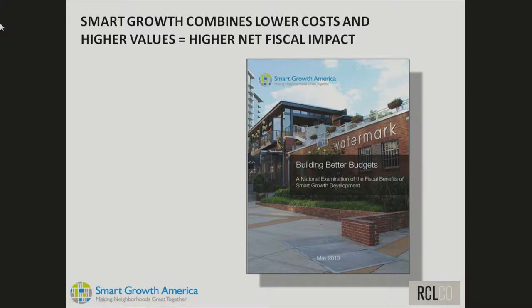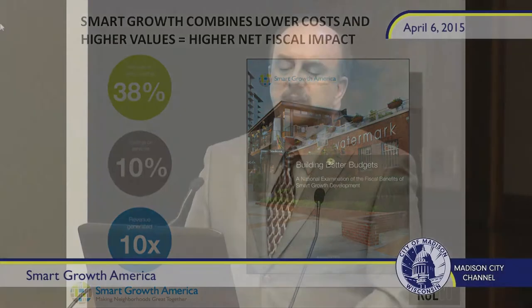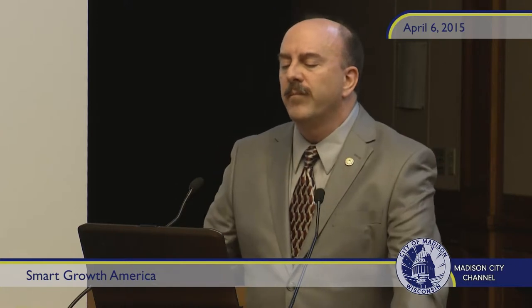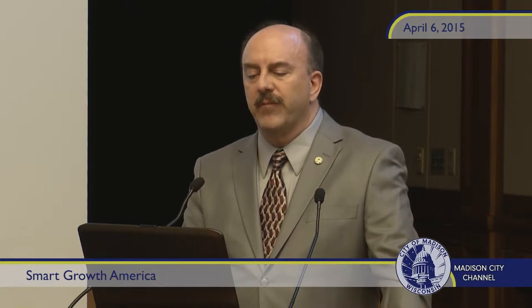Two years ago, Smart Growth America released a study called 'Building Better Budgets,' surveying about 17 individual community studies from across the country. Results showed savings on infrastructure for more compact development of up to 38%, savings on regular budget services of 10%, and revenue generated as much as 10 times higher. Notably, Joe Minicozzi out of Asheville, North Carolina has been demonstrating the tremendous difference in revenue generation potential of co-located businesses on a main street versus isolated drive-only locations.